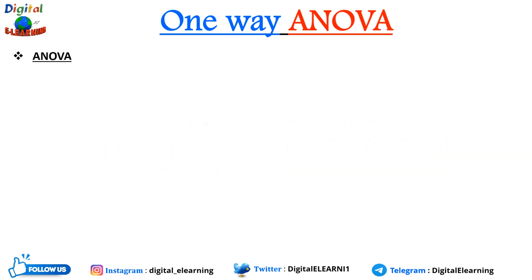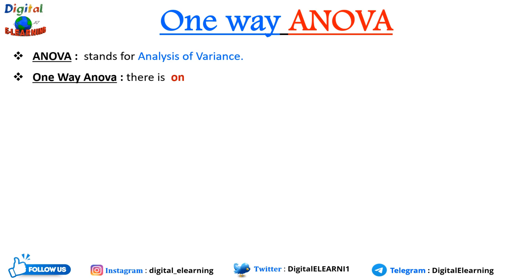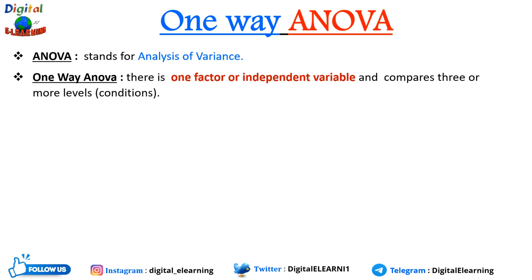What is one-way ANOVA? ANOVA stands for Analysis of Variance. In one-way ANOVA there is one factor or independent variable, and it compares three or more levels or conditions. How is it different from two-way ANOVA? In one-way ANOVA there is only one factor or independent variable, whereas in two-way ANOVA there are two factors.